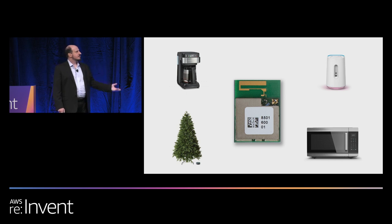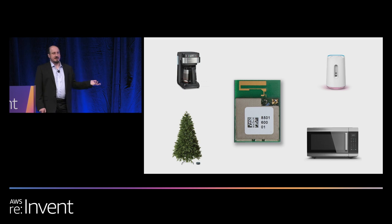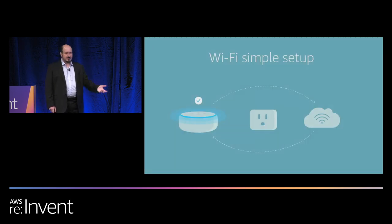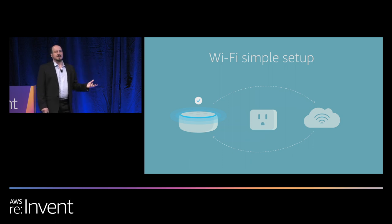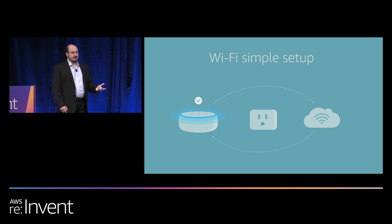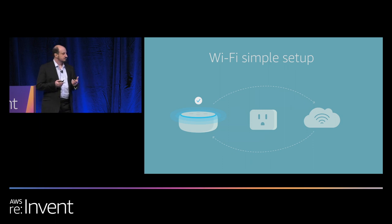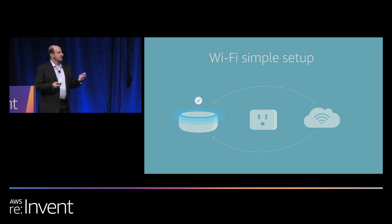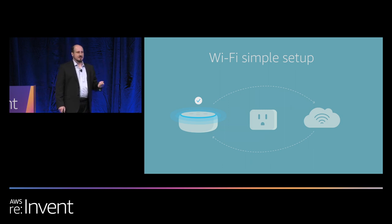But beyond a simple connectivity add-on, ACK is packed with cool features, such as Wi-Fi Simple Setup. One of the major pain points of a smart home device is how you connect it to the home Wi-Fi network. Remember the last time you connected a smart device? You probably used your smartphone, connected to your device, found your Wi-Fi network, remembered your password, and typed it in. Well, with Wi-Fi Simple Setup, all you may need to do is literally just plug it in.